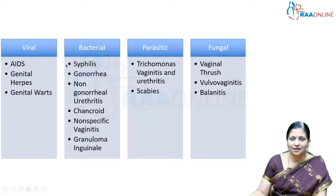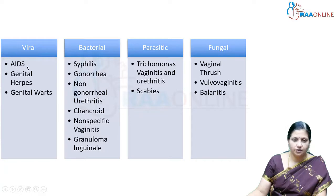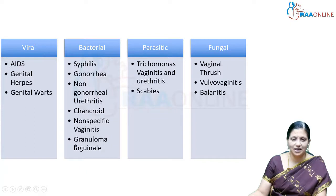STIs can be classified as viral, bacterial, parasitic, and fungal. Viral STIs include AIDS, genital herpes, and genital warts. Bacterial STIs include syphilis, gonorrhea, non-gonococcal urethritis, chancroid caused by Haemophilus ducreyi, non-specific vaginitis, and granuloma inguinale. Parasitic STIs include Trichomonas vaginitis, urethritis, and scabies. Fungal STIs include vaginal thrush, vulvovaginitis, and balanitis.